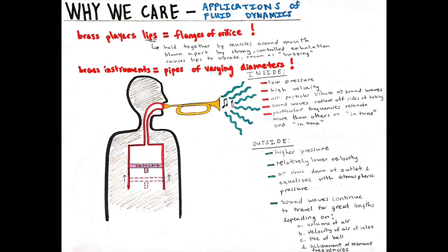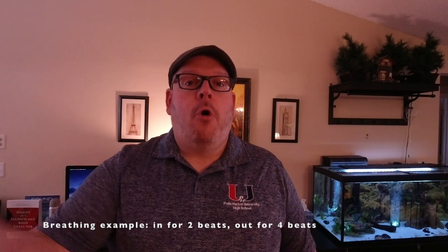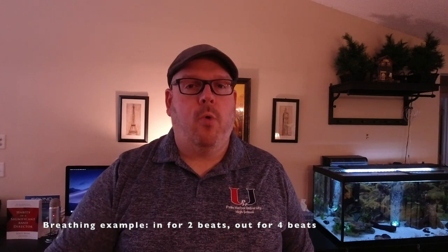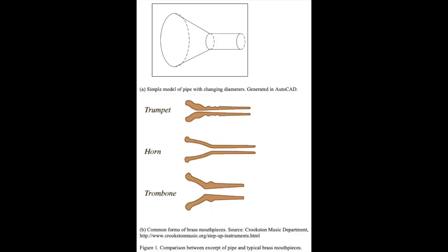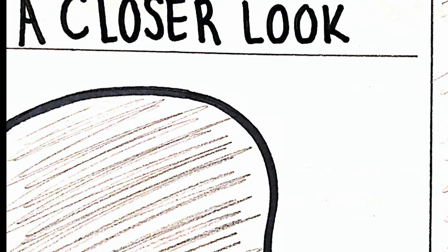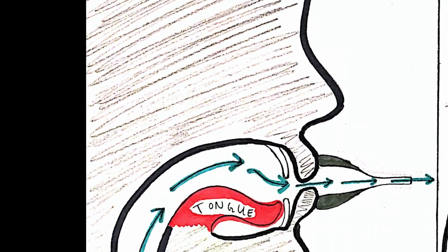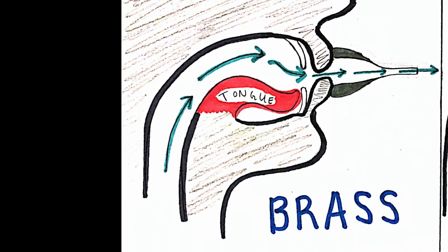Brass and woodwind instruments model both of these concepts. Players take air into the lungs and expel it through their lips, creating vibrations and a sound we call the buzz. These are typical mouthpieces, which resemble what we saw in the Venturi effect model. A closer look shows us how air travels through the oral cavity and is sent through a pipe of much smaller diameter.